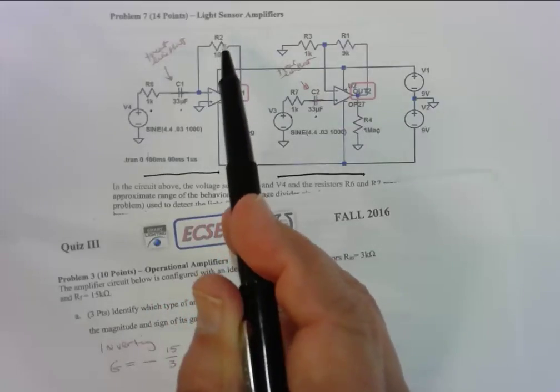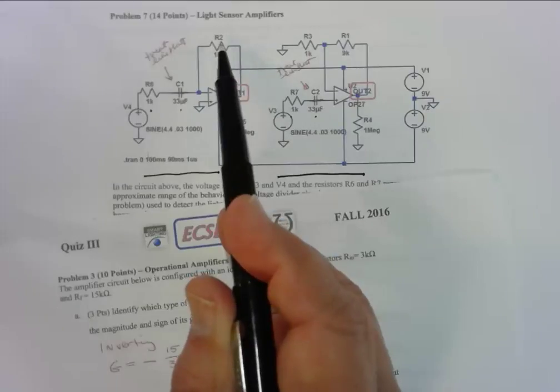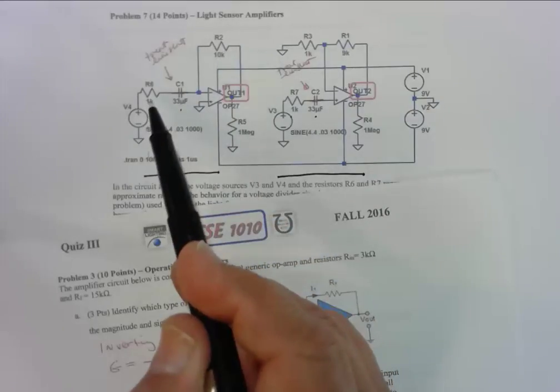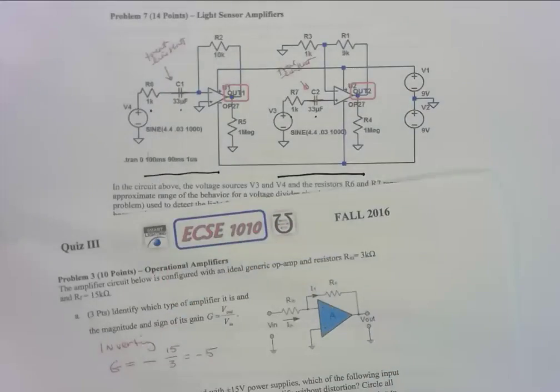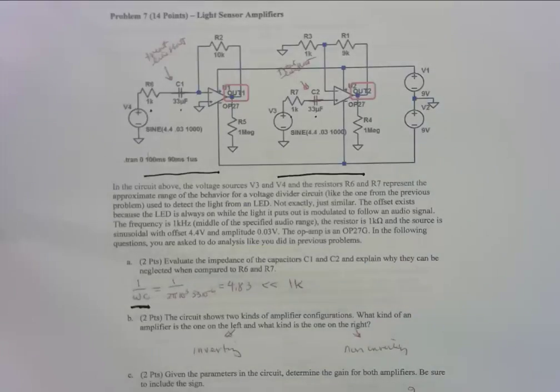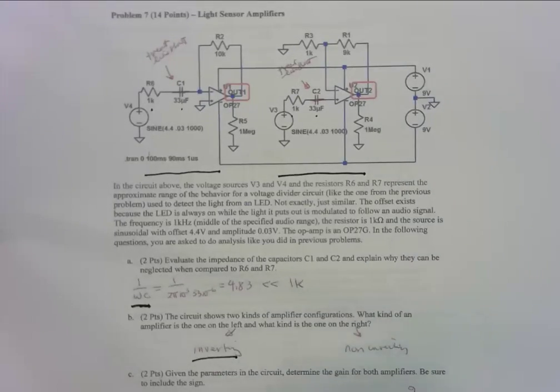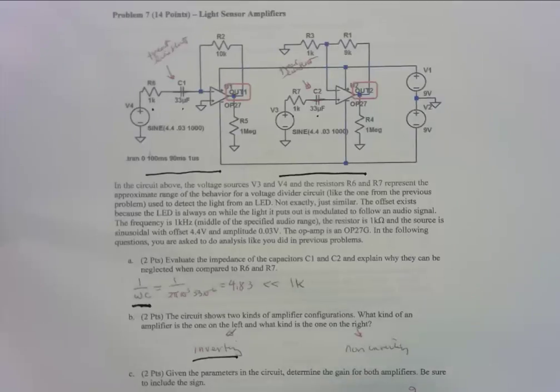The gain for such a configuration is going to be 10K divided by 1K with a minus sign in front. So the one on the left is an inverting amplifier and its gain is going to be minus 10.